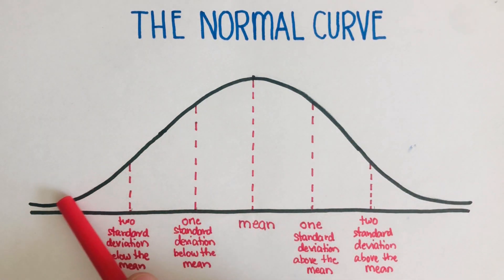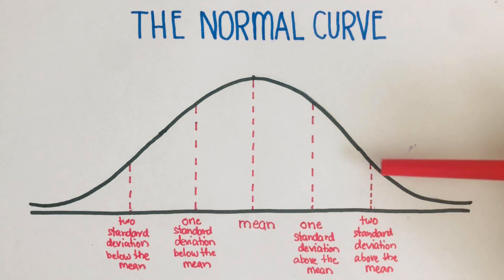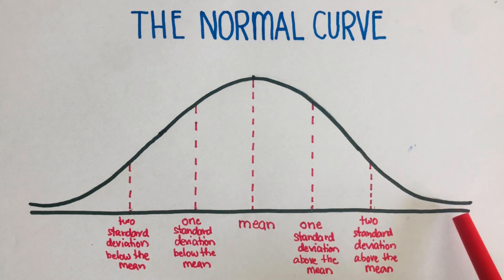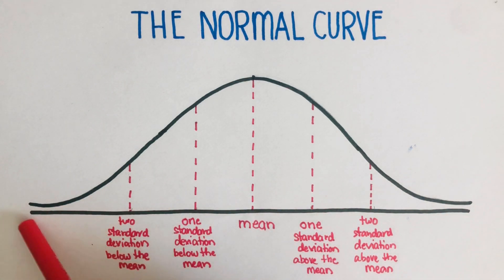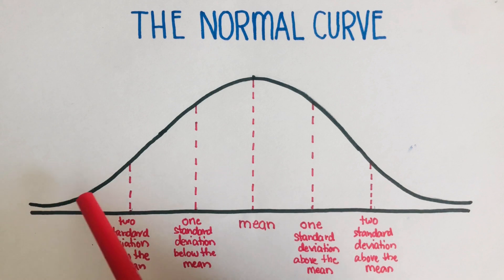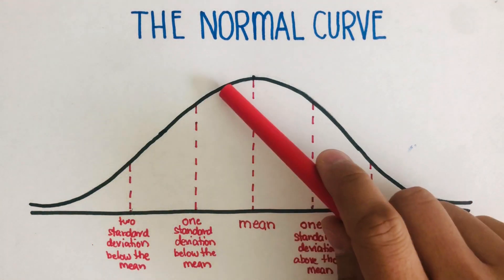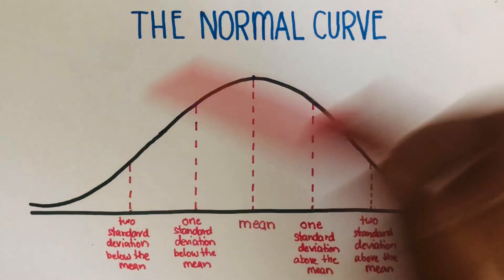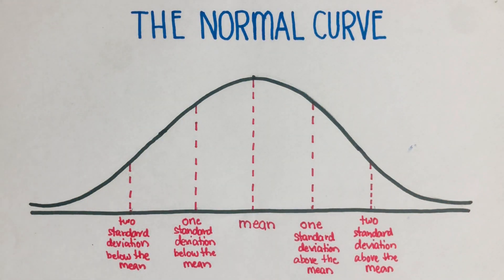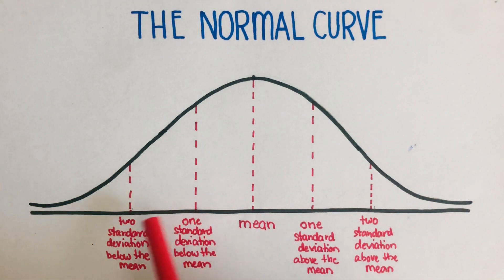Another important feature of this normal curve is that the tails are asymptotic. Asymptotic means they are approaching closer and closer to the horizontal line but they're not going to touch it. This horizontal line is the asymptote — the tails just get closer and closer but never touch it. Another important feature is that the normal curve is divided into parts or segments.